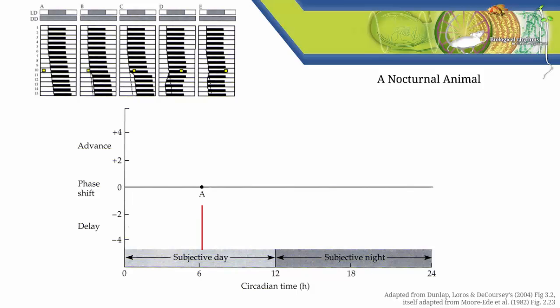Now we do this for the data from all the other experiments. In experiment B, a pulse at CT 12 produced a phase delay of about 1 hour. In experiment C, a pulse at about CT 14 produced a large phase delay of about 3 hours. In experiment D, a pulse at CT 20 produced a large phase advance of about 4 hours. And finally, in experiment E, a pulse at CT 24 produced a smaller phase advance of about 2 hours.